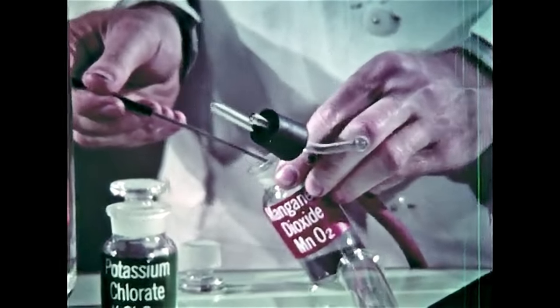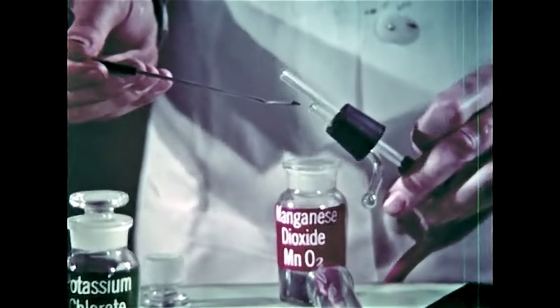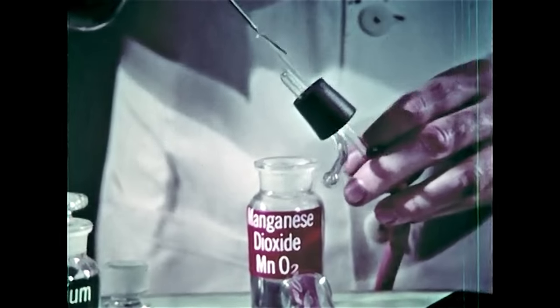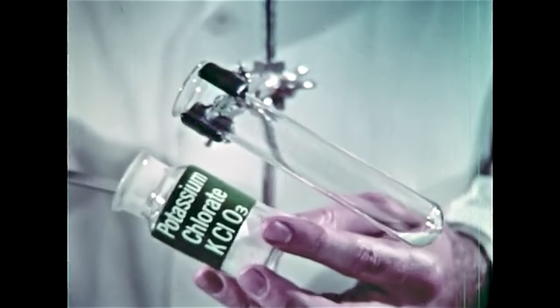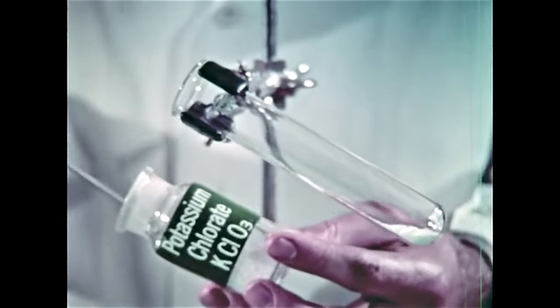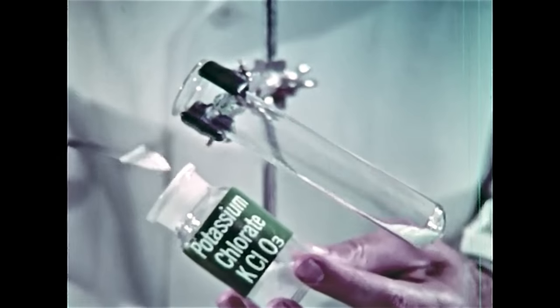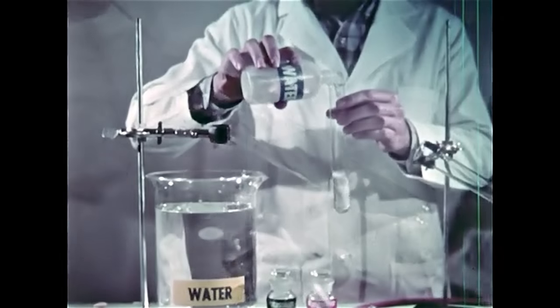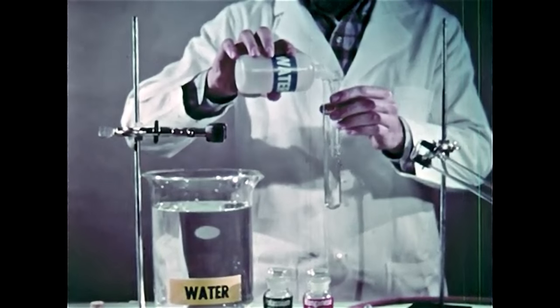First, the catalyst is put into this bulb so that it can be added later. Then the potassium chlorate is put in a test tube for heating. Finally, the second tube for the oxygen is prepared.